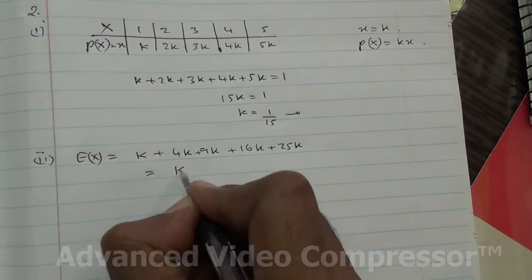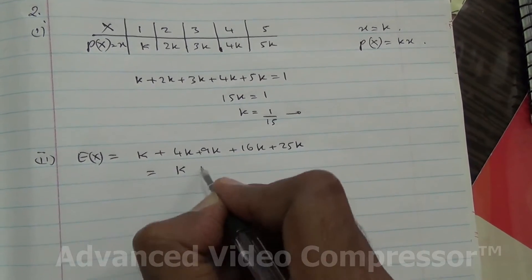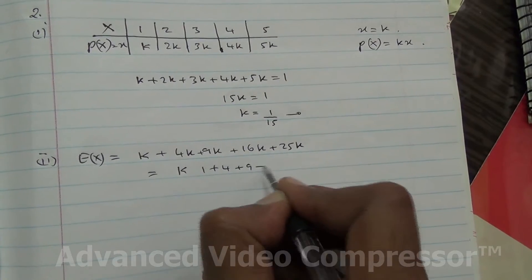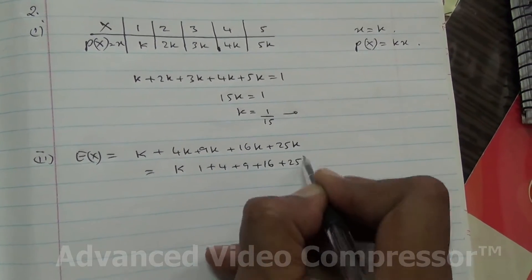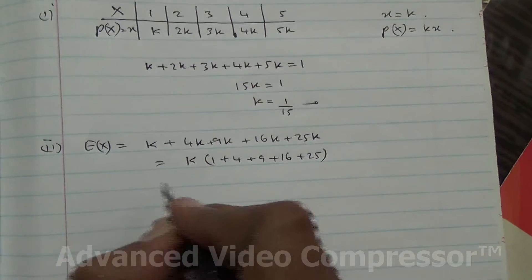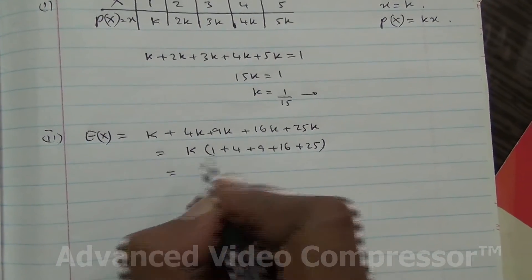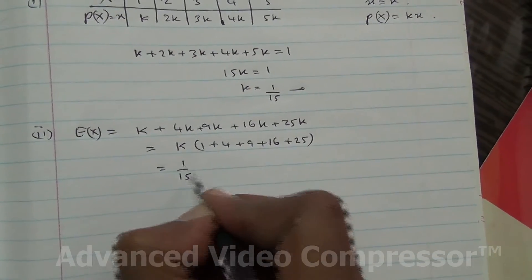Now, k is common, so I can put k outside and I've got 1 plus 4 plus 9 plus 16 plus 25. And what is k? It is 1 over 15.